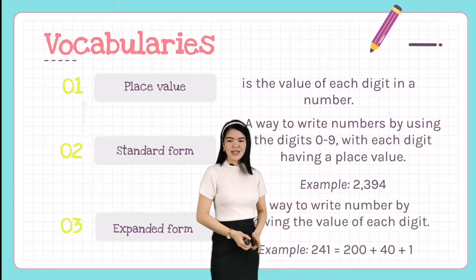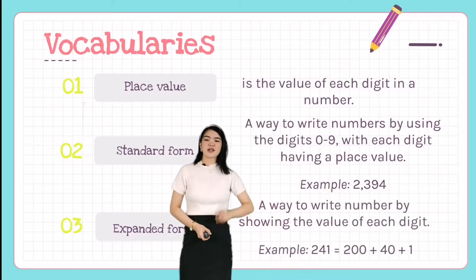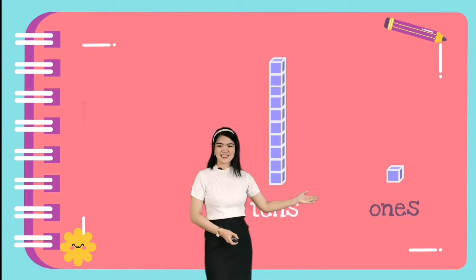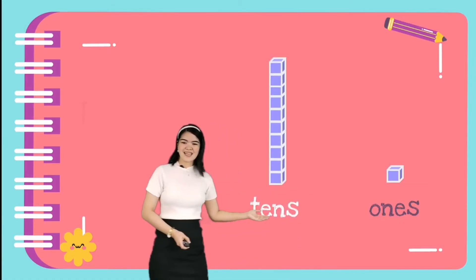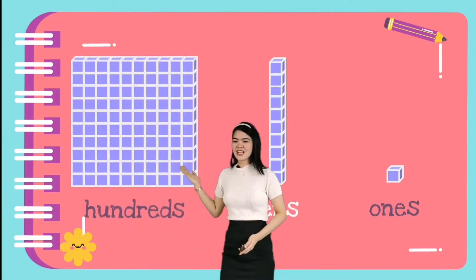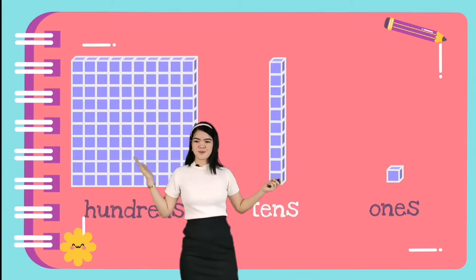Next we have expanded form. Now let's move on to our lesson. I have here ones, tens, and hundreds — this is the place value chart.